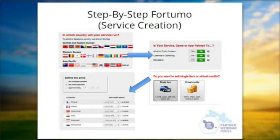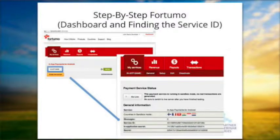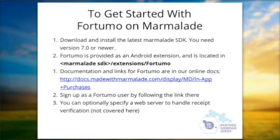A service in Fortumo is basically an item. You can set it up as a single item or virtual credits — that's the same as consumable versus non-consumable products in other stores. If you want multiple products, just set up more services. Services are referred to by an ID and a name. There's a dashboard on the website that lists all the services you've created, and once you click the service name, it shows the ID and app secrets. There are also tabs for tracking revenue and transactions, and a payouts button to configure how you receive your money, including via PayPal and credit card.